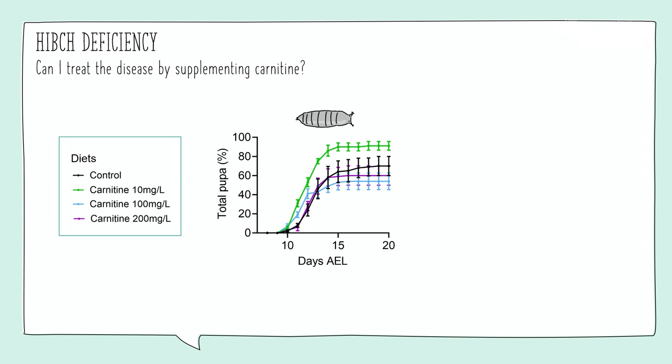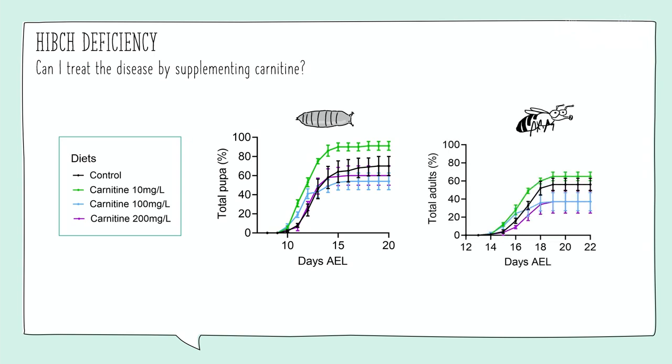So I added carnitine to the diet in increasing concentrations to get a sense of what might happen. And we can see that looking at that green line there at the top, the lowest concentration of carnitine was actually able to confer an increase in the number of total pupae. And so that potentially, that rerouting mechanism might be making a difference there. But as it goes with science, things aren't always consistent. So I didn't observe the same effect in adult flies, but hey, it's something.